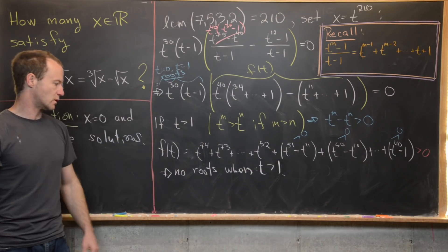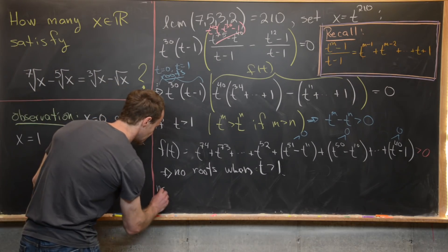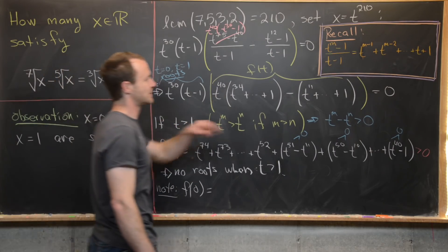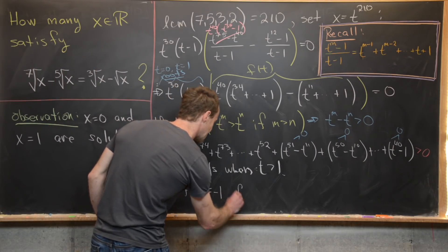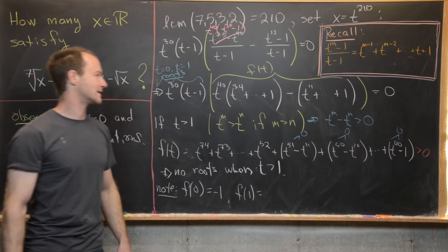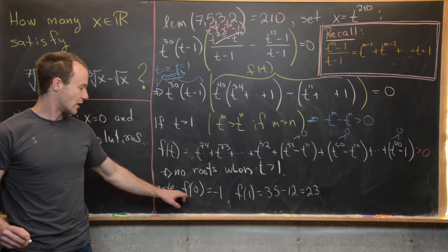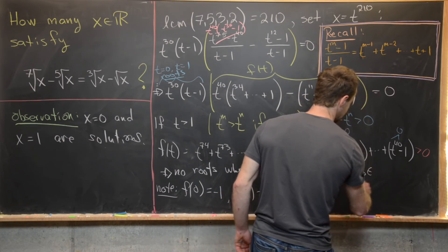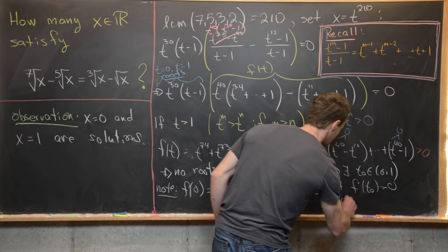Now let's check whether there's a root between t equals 0 and t equals 1. We compute f(0): the first term vanishes due to the t^40 factor, and the constant term equals 1, so f(0) equals 1. Then f(1): the first sum has 35 terms each equal to 1, giving 35, and the second sum has 12 terms giving 12, so f(1) equals 35 minus 12 equals 23. Wait — at t=0 the function is positive and at t=1 it is also positive.